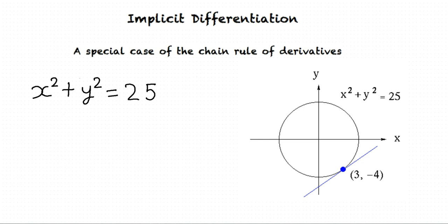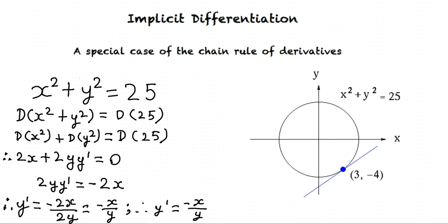Now let's begin with the equation x squared plus y squared equals 25. Differentiate both sides of the equation and we get d of x squared plus y squared equals d of 25, which gives us d of x squared plus d of y squared equals d of 25. Therefore, 2x plus 2y multiplied by y prime equals 0, which gives us 2y multiplied by y prime equals minus 2x. Therefore, y prime equals minus 2x over 2y equals minus x over y.